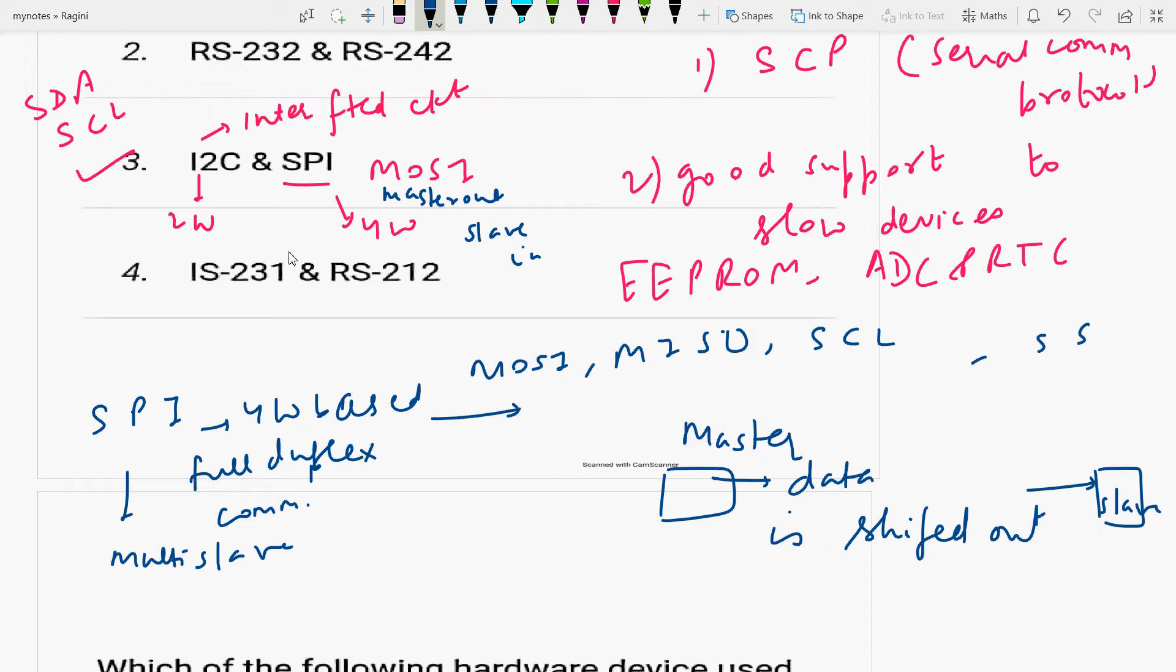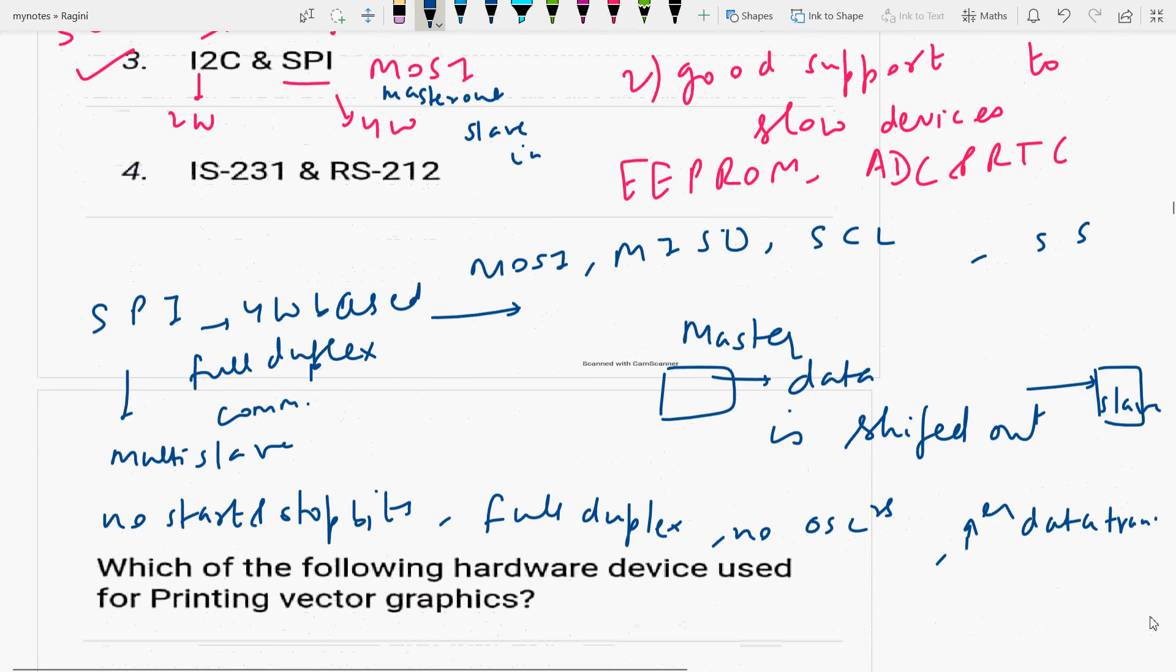SPI's advantages: no start and stop bits, so data can be streamed continuously without interruption. It supports full duplex, two-way communication. No need for precision oscillators in slave devices because master clock is used. Higher data transfer rate as it uses 10-12C, and simple software implementation.